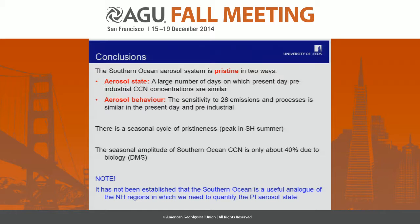To conclude: the Southern Ocean aerosol system is pristine in two ways — it's pristine in terms of its state, looking like it did in the 1750s, and pristine in terms of its behavior, remaining sensitive to the same parameters as in the pre-industrial. There is a seasonal cycle in pristineness, with greater pristineness in southern hemisphere summer. And the seasonal amplitude of CCN is not entirely driven by biological processes, so we can't conclude it's all driven by biological emissions just because it's pristine.